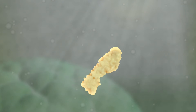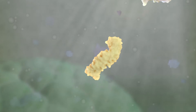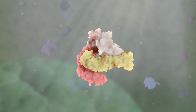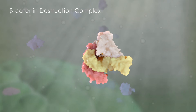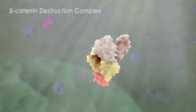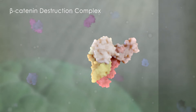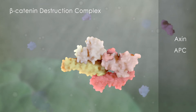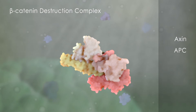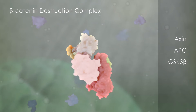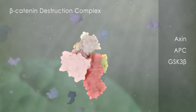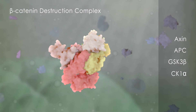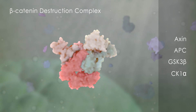When Wnt is inactive, the beta-catenin destruction complex is formed in the cytosol. This complex consists of two scaffold proteins known as axin and APC. Other proteins include GSK3-beta and CK1-alpha, which phosphorylate beta-catenin.